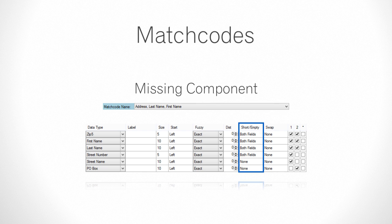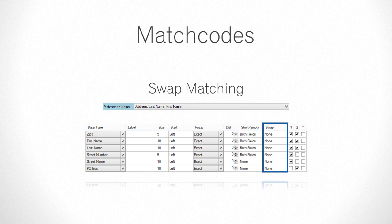Missing Component. The Short Empty setting specifies if two records can match even if a particular component is blank. Swap Matching: if the values of two components are reversed between two fields or potentially reside in multiple fields, swap matching will compare the values across the fields in addition to comparing the default mapped-in field.